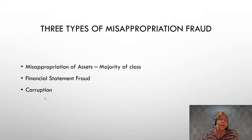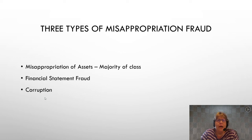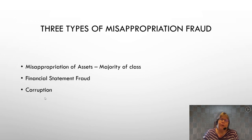Financial statement fraud is basically falsifying your financial statements in order to mislead external parties such as stakeholders, the SEC, those who are buying your stock, or potentially banks. Corruption is more of a bribery type of fraud where you are trying to pay to get some special treatment. We're really going to focus on the first one and a little bit on the second one.